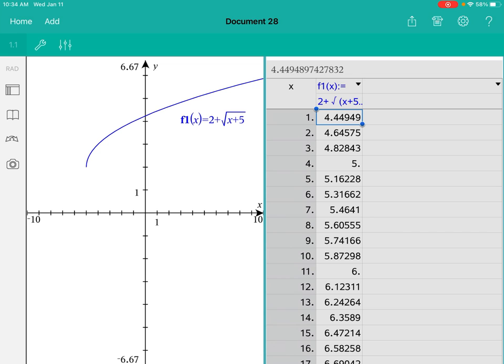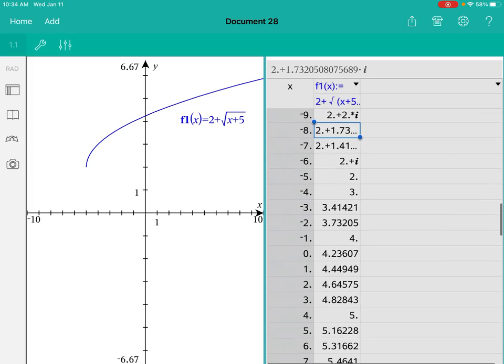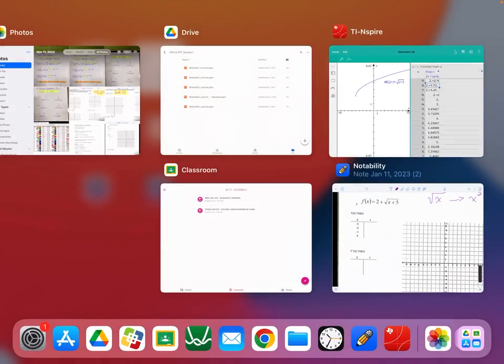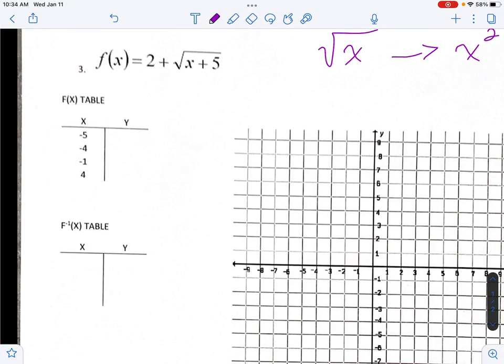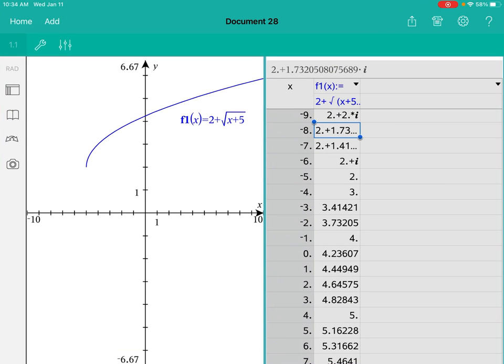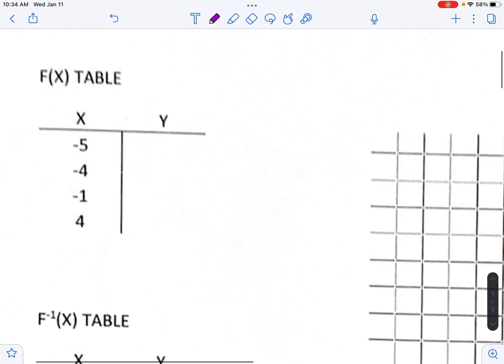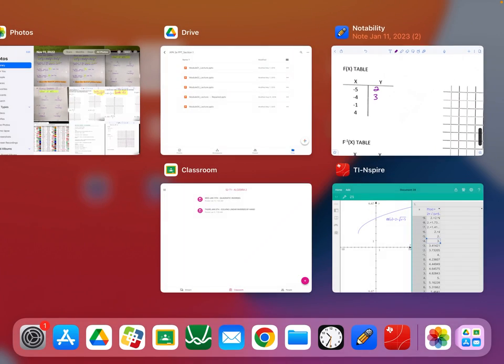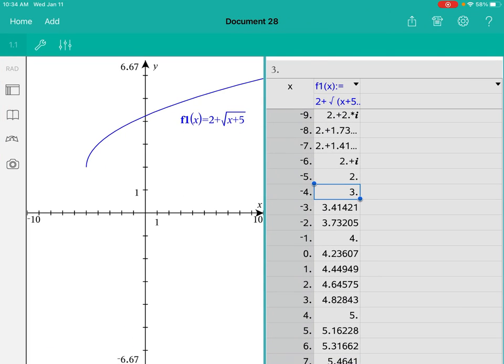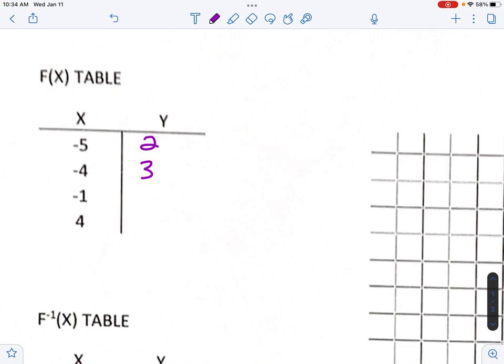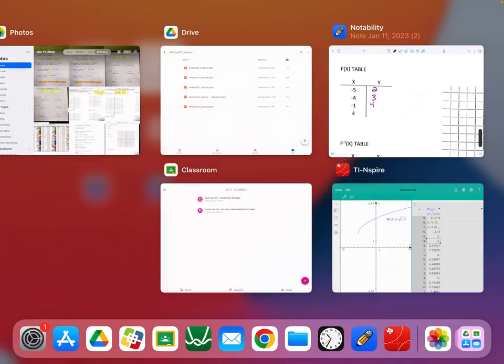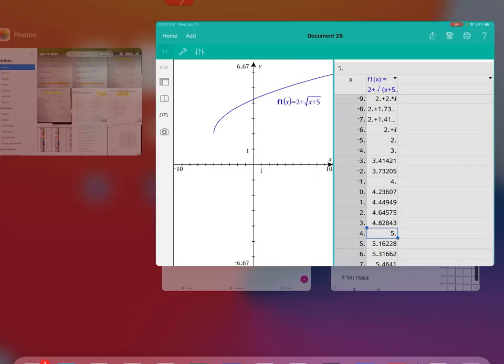And then what we want to do is we want to fill out the missing y values in the table that we have here. So we're going to start at negative 5. So the value of negative 5 was 2. Negative 4 was 3. So 2 and 3. Now we need negative 1. The value of negative 1 is 4. The x value of 4, which is down here, is 5.